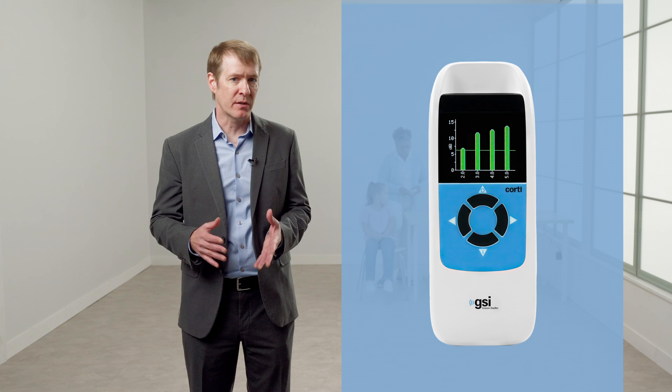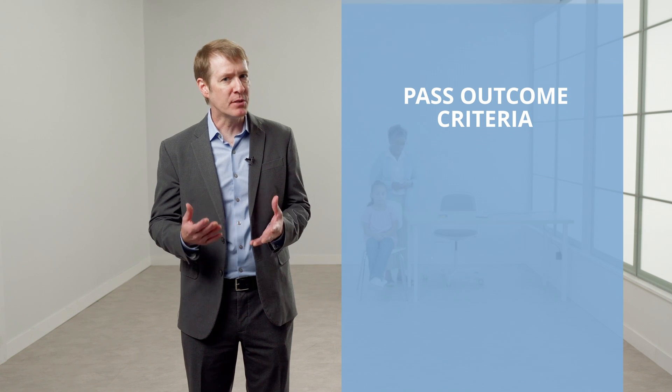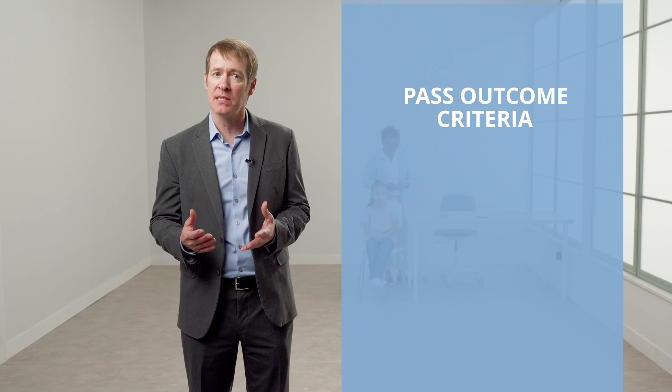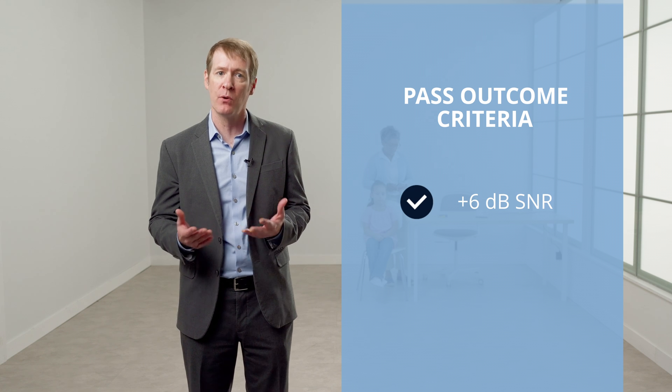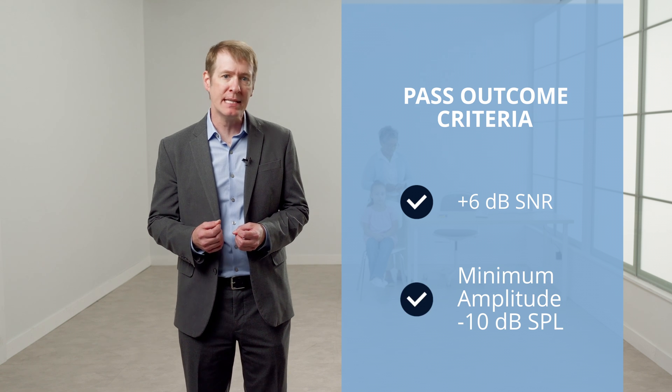During the OAE test, the results will display in real-time as either signal-to-noise bars or a value graph on the display screen of the Cordy. For screening protocols, the device automatically analyzes the OAE and determines whether the screening result is a pass or a refer. There are two criteria for a pass outcome: first, the amplitude of the DPs at each of the four test frequencies must be at least 6 dB above the noise floor; and the DP minimum amplitude must be greater than minus 10 dB SPL. A pass or refer message will appear on the display screen when screening is complete, and test results are automatically stored.